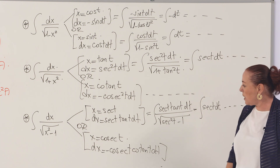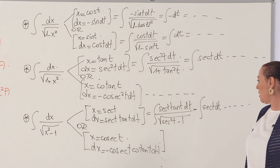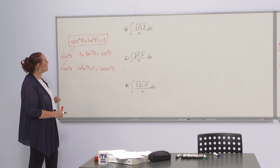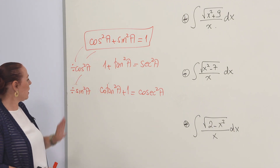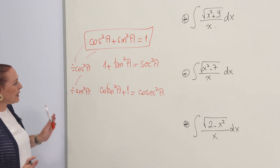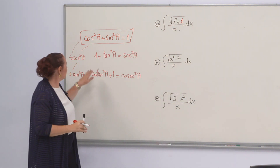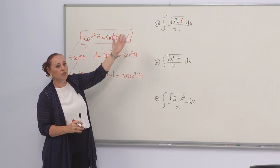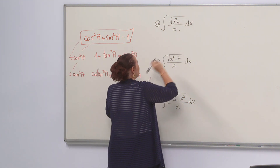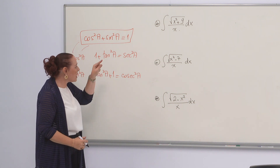We're going to talk about the remaining steps in the next few examples. Now I have three more examples that are slightly more complicated. These key identities will guide our choices. For the first example, if instead of 9 I had 1, I'd already know that 1 + tan² = sec², so I'd do a tangent substitution.